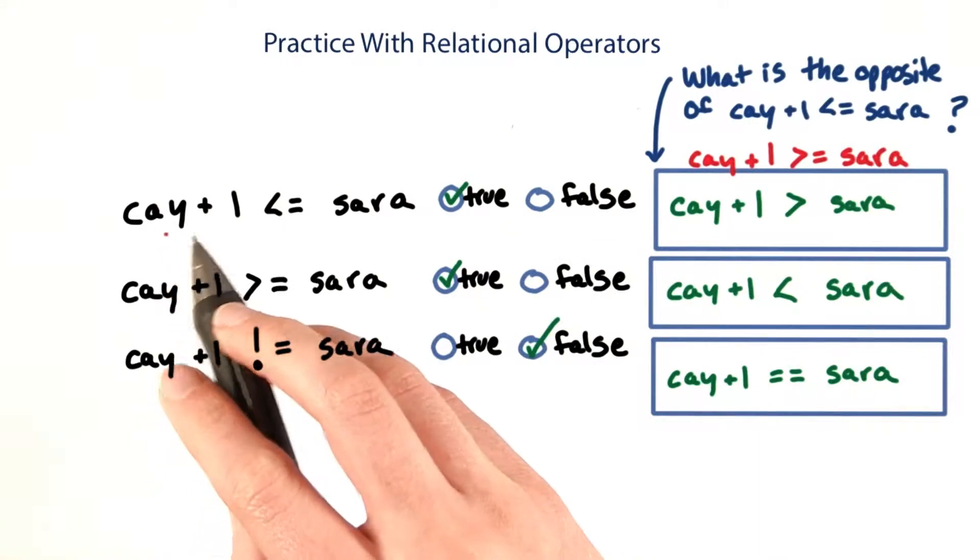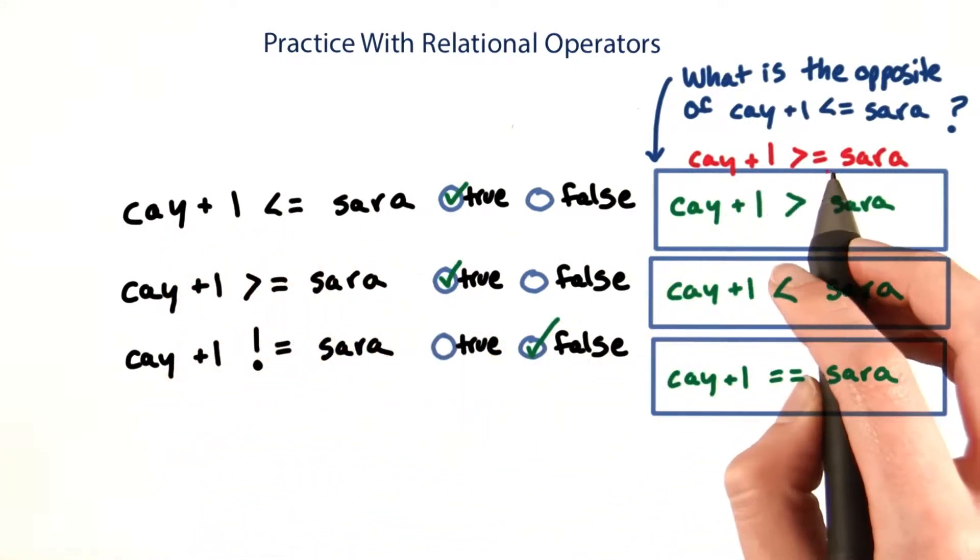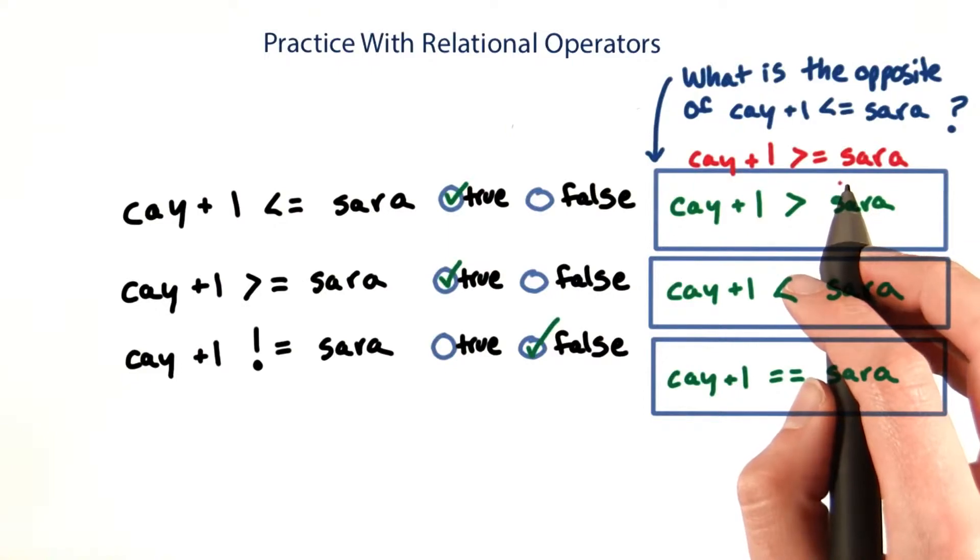You may have thought that the opposite of chi plus 1 is less than or equal to Sarah should be chi plus 1 is greater than or equal to Sarah. But the opposite has to disagree for every possible value of chi and Sarah. Let's look at a representative set of examples.